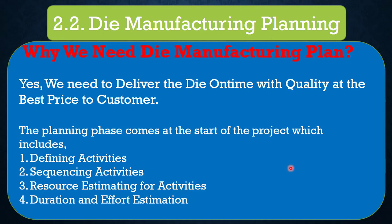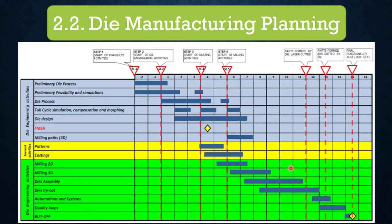Number four is duration and effort estimation. Duration is directly linked with delivery of the die to the customer, so this step should be completed with higher accuracy using Work Breakdown Structure along with the Critical Path Method to complete the die on time. This should include a few correction loops for quality improvement. This is the Gantt chart, which includes high level activities and time duration for completion.